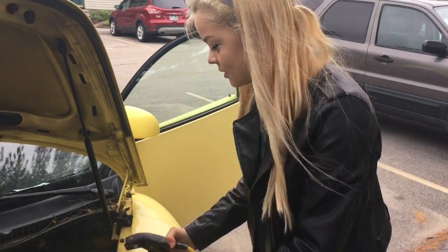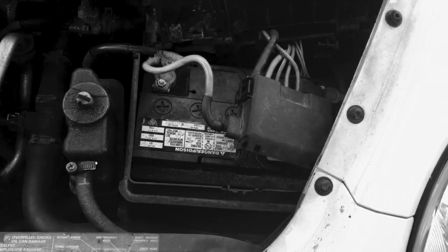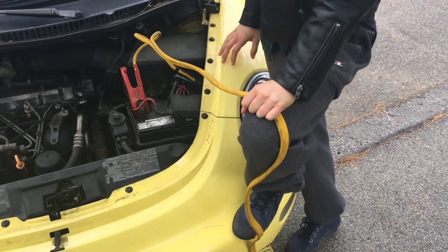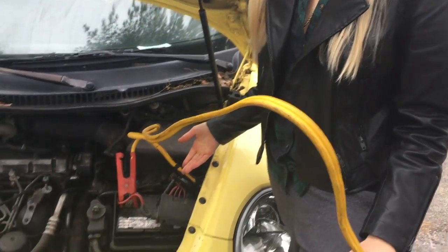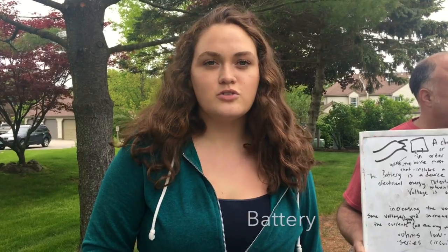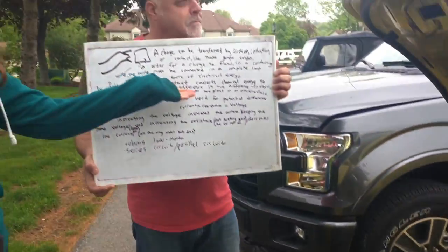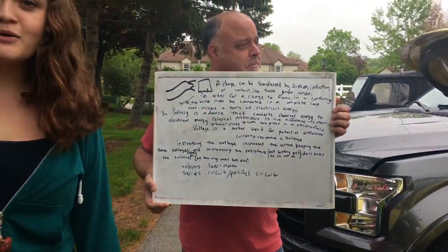A charge can be transferred by friction, induction, or contact — like these jumper cables. In order for a charge to flow into a conducting wire, the wire must be connected in a complete loop that includes a source of energy. Our source of energy is the battery — a device that converts chemical energy to electrical energy.